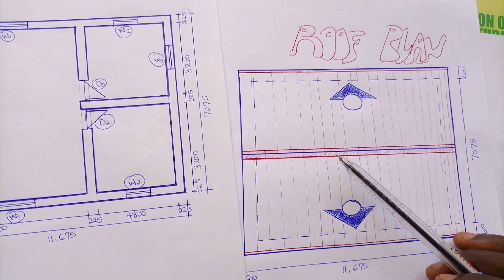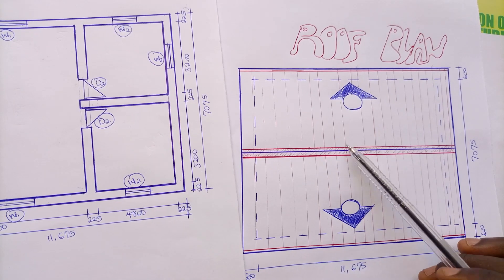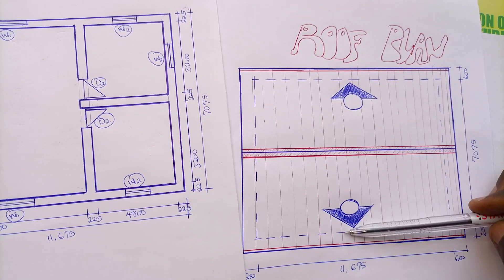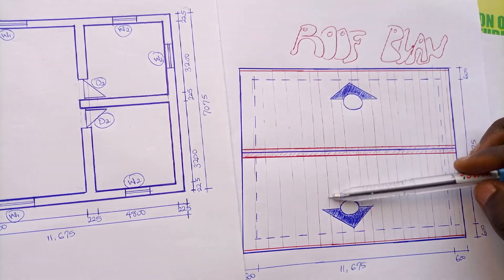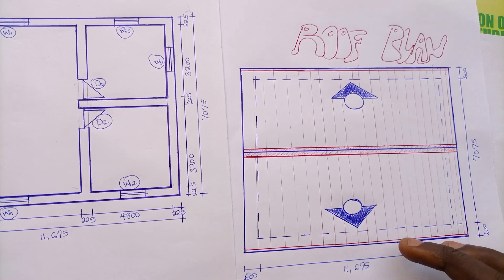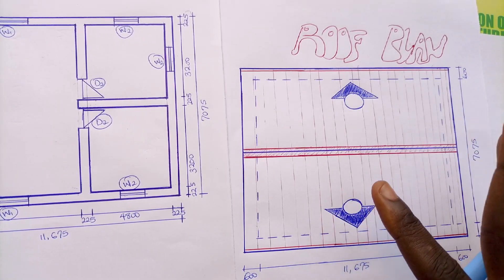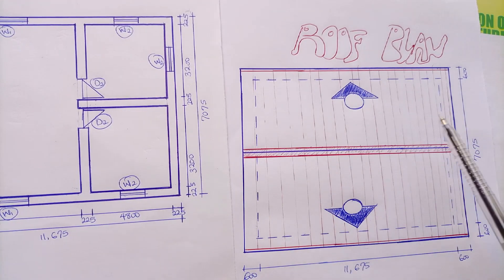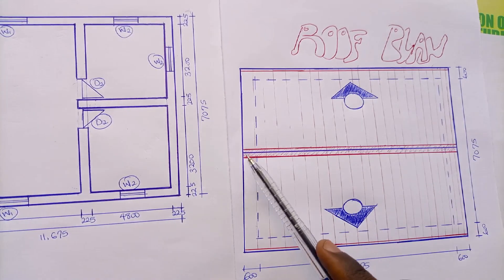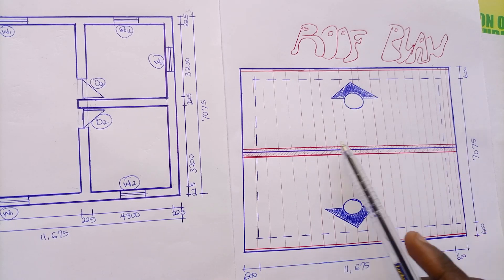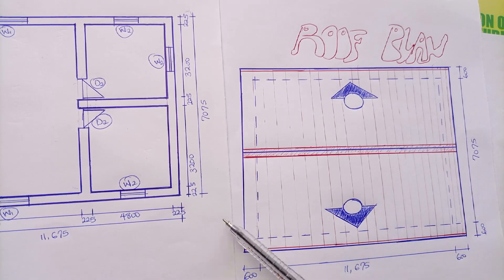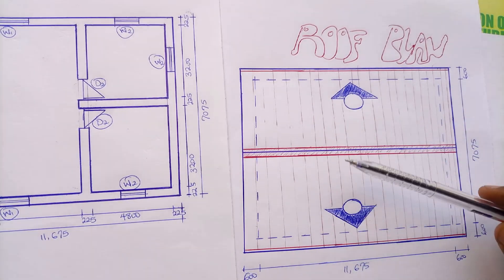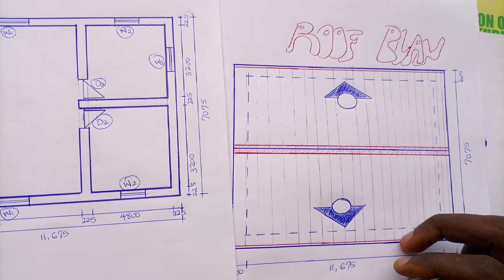This is a gable roof — not a very complex roof, just a normal gable roof. It falls to this side and to the other side. It is a single-pitch roof with double gable ends, meaning it falls to two sides. Take note of that.